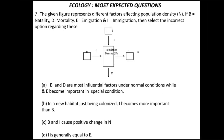Question 7: the given figure represents different factors affecting population density. If B is natality, D is mortality, E is immigration, and I is emigration, select the incorrect option regarding these. This diagram will be clear to all ecology students studying population density. Out of the four options, you need to find the false statement. The false statement is D — that I is generally equal to E.